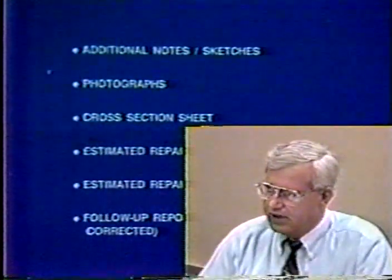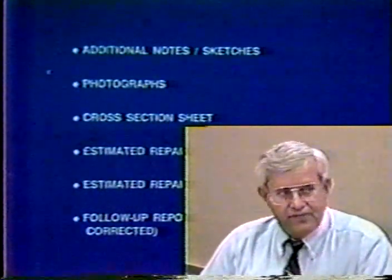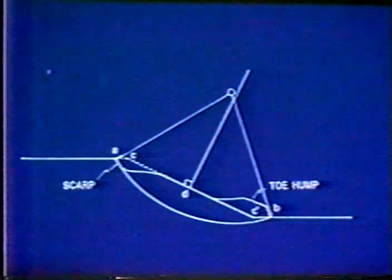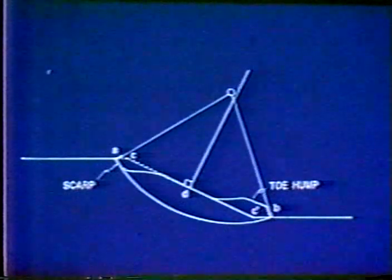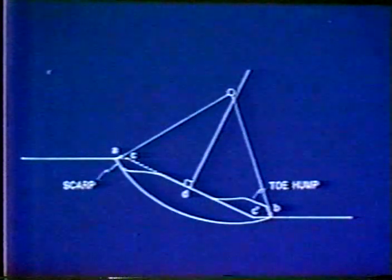Note any other type of maintenance activity, and make additional notes and sketches. A good thing to do is take photographs. You may want to try to get cross sections of the highway embankment. Estimate repair cost — a later session will give a quick way to estimate what it would cost if the embankment failed. Then do a follow-up report. A profile or cross section is a simple way of estimating how deep the failure is.